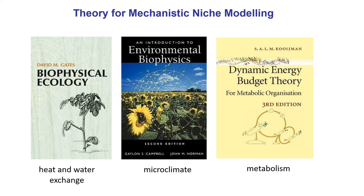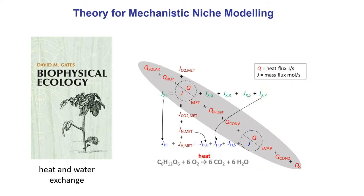The heat budget side of things relates to the thermodynamics scheme introduced in the first part of this lecture series. We're talking about a whole series of terms that relate to exchange of energy in the form of heat, which according to the first law of thermodynamics must sum to zero when you add them all together. I'm going to give you a very simple example to give you the gist of how it works to solve a heat budget for an organism.